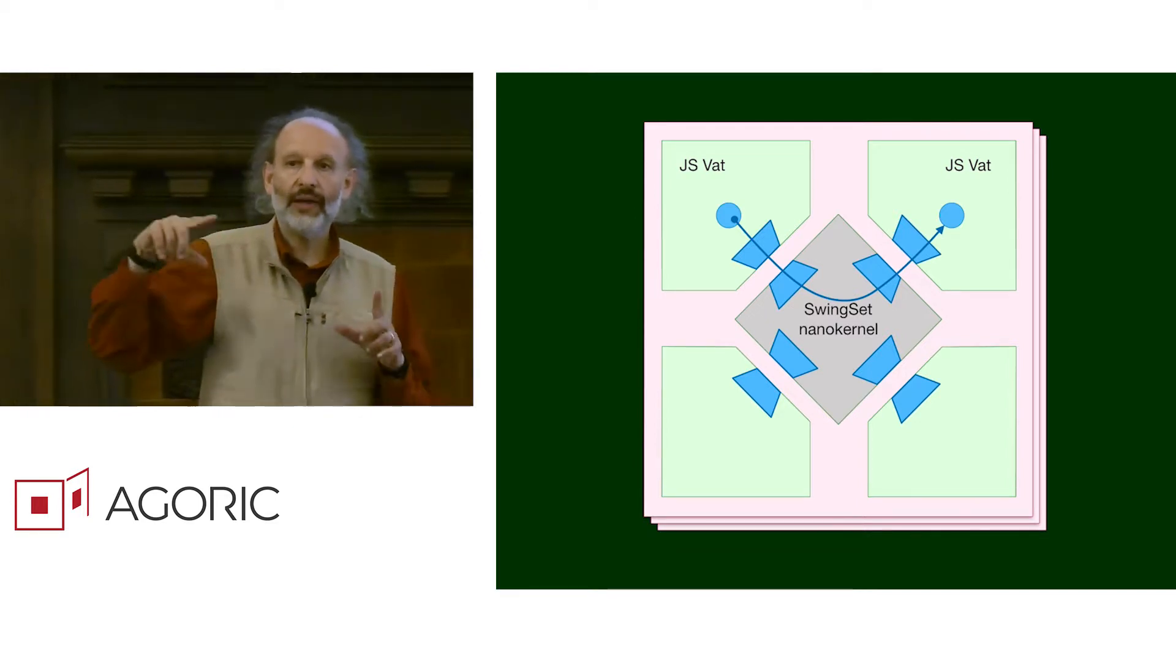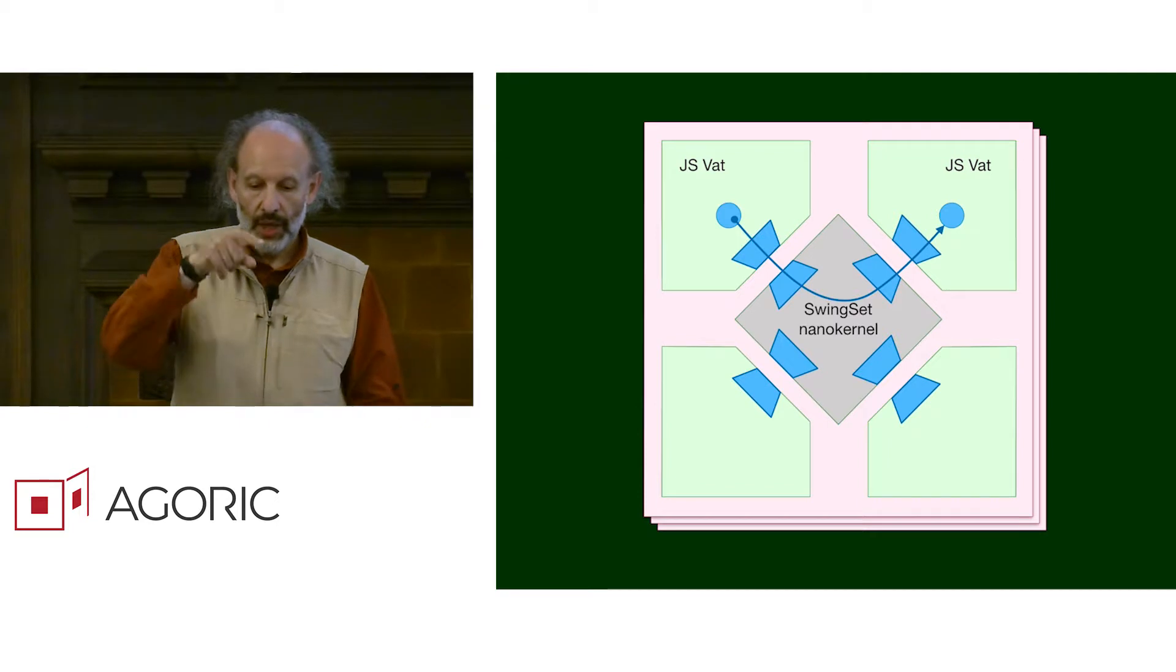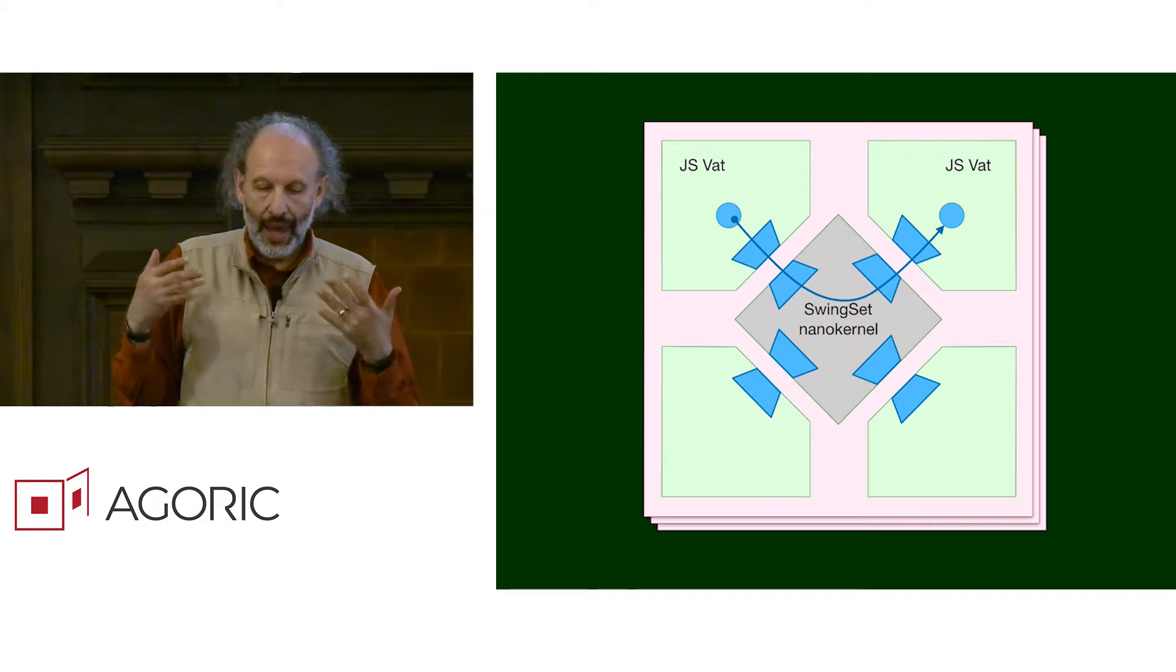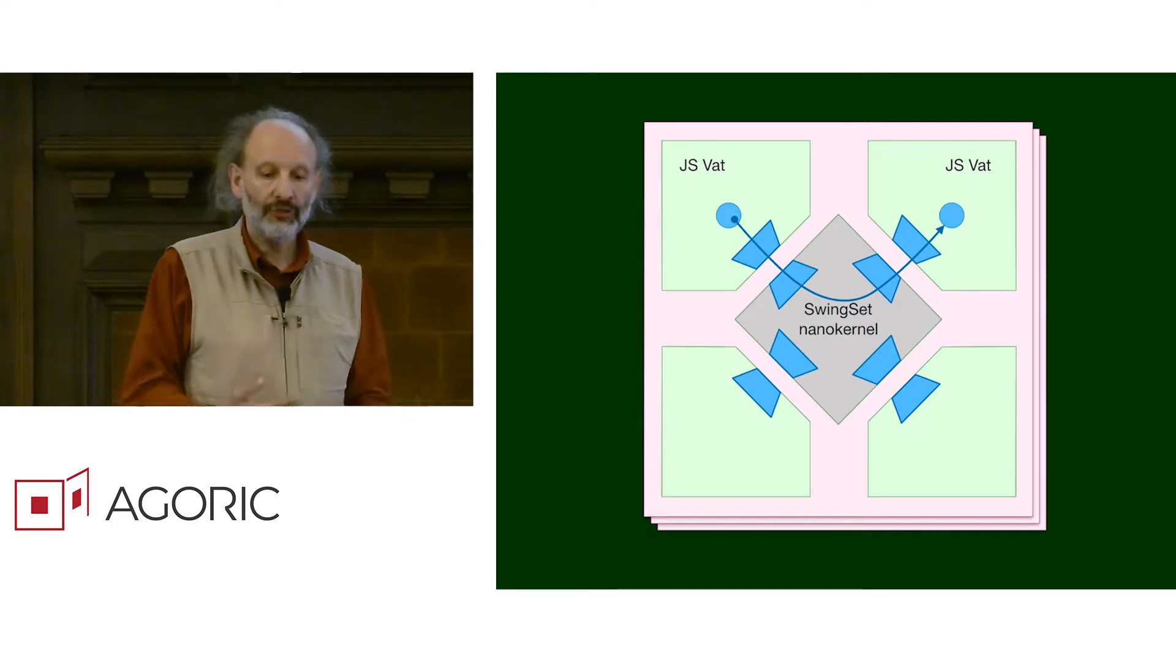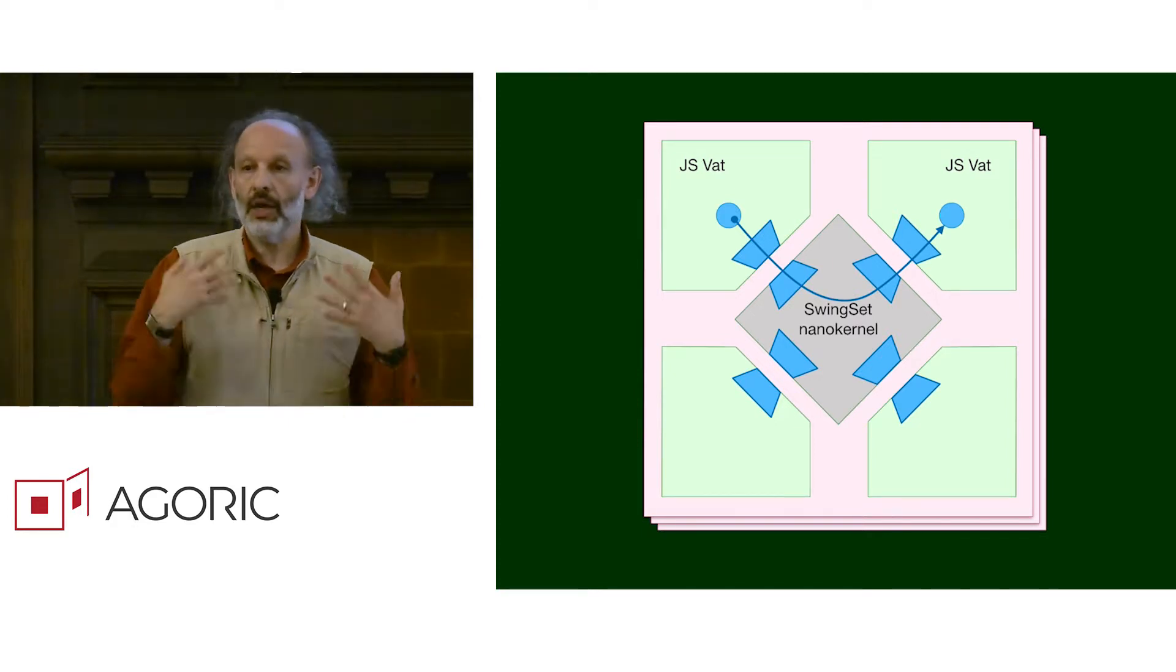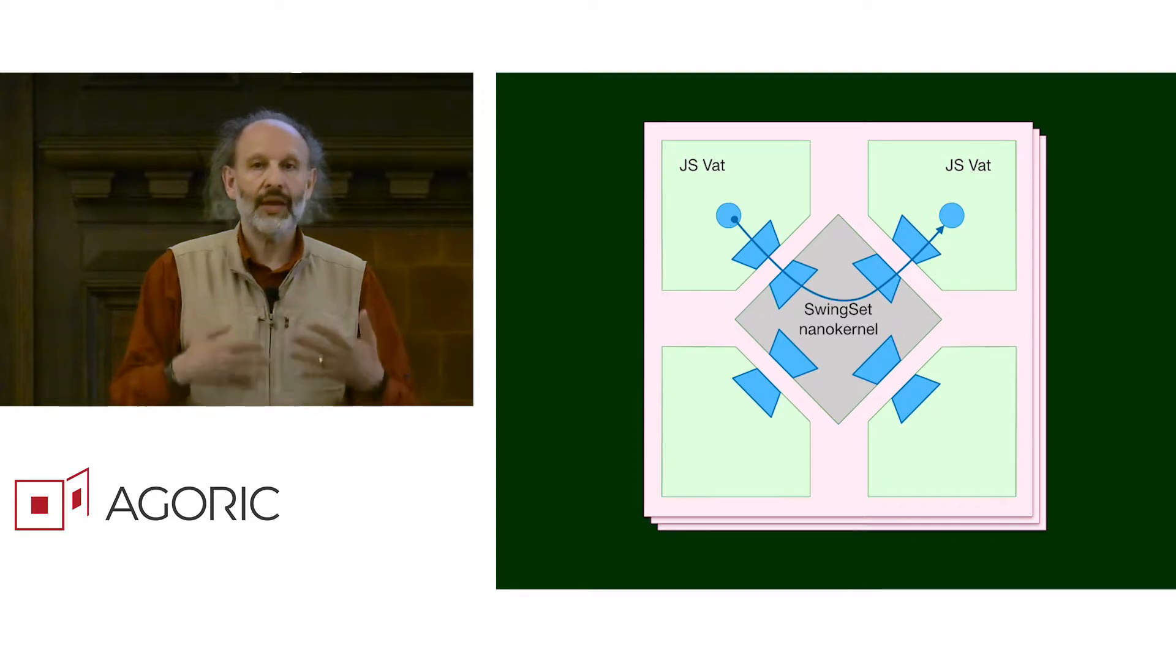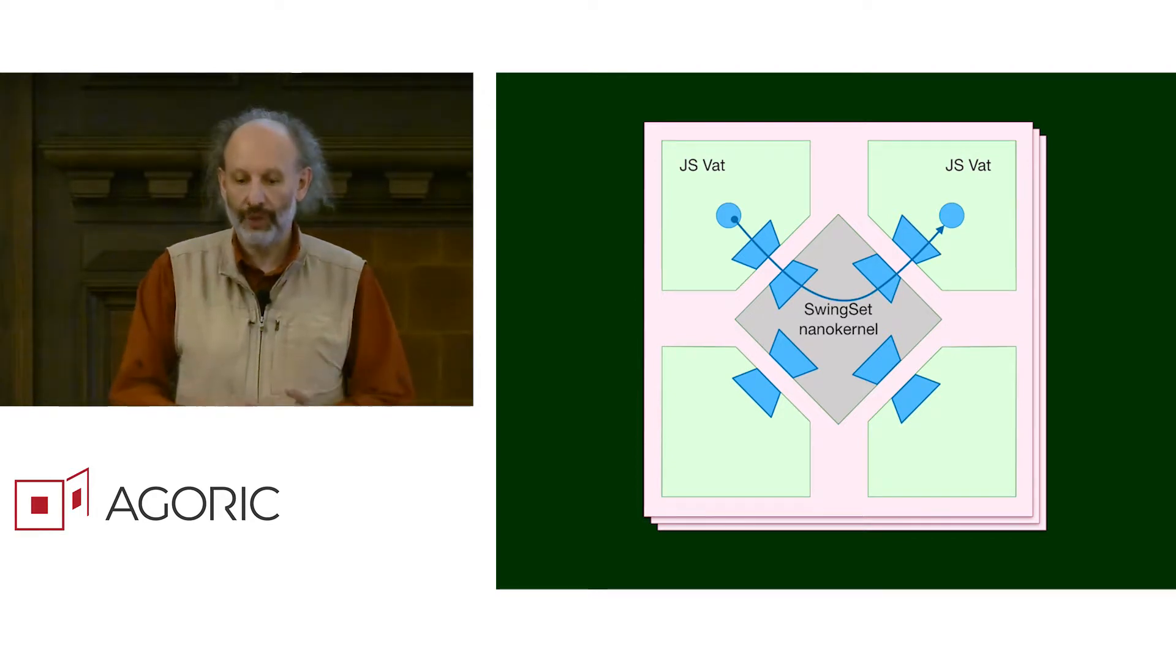All of the VATs within the same swing set interact with each other through the swing set nano kernel. The order of message delivery among the VATs within the swing set is deterministic so that all the validators replicating the same computation get the same order and proceed in the same manner.